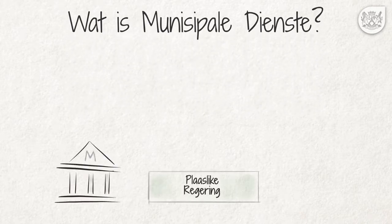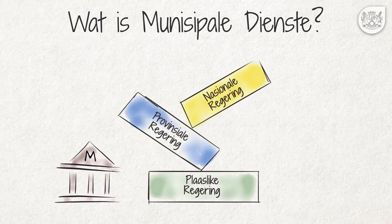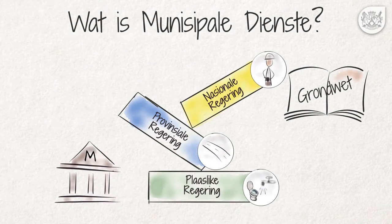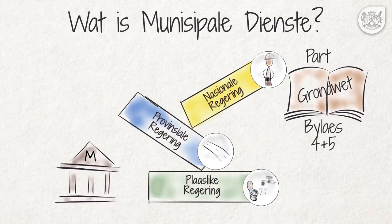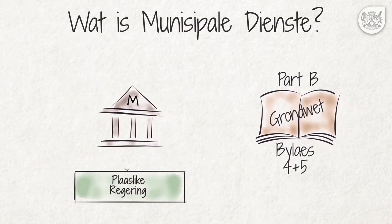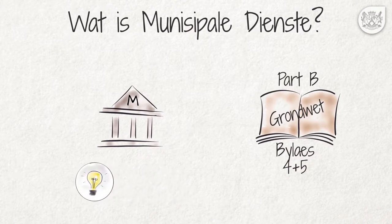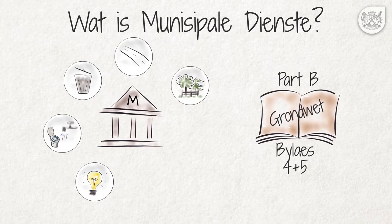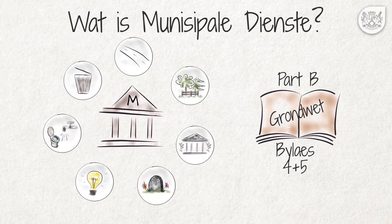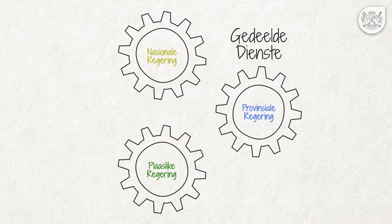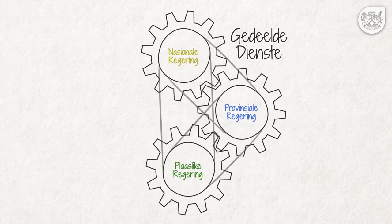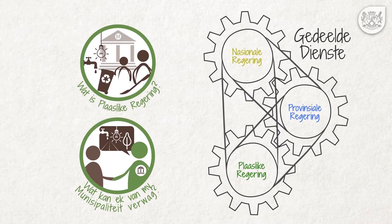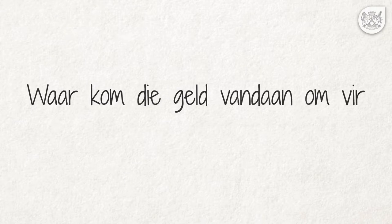Munisipaliteit is 'n deel van die plaaslike sfeer van regering. Die plaaslike sfeer van regering, saam met die nasionale en provinsiale sfere, vorm die drie sfere van regering. Die Grondwet sê in Bylaes 4 en 5 watter funksies die verskillende sfere van regering moet verrig. Deel B van daardie bylaes bepaal die plaaslike regeringsdienste wat ons daaglikse lewens direk raak. Waar kom die geld vandaan om vir munisipale dienste te betaal?